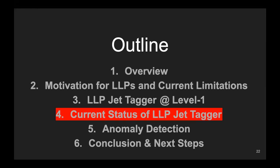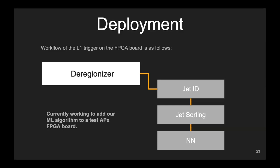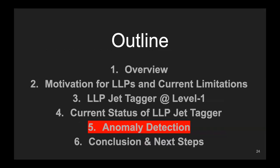What's the current status of the LLP tagger? The workflow of the L1 trigger on the FPGA board has a section called the D-regionizer, followed by the jet ID section where the seeded cone algorithm runs to cluster particles into jets, then jet sorting which sorts jets by transverse momentum, and finally the neural network algorithm. I'm currently working to add our machine learning algorithm to a test APX FPGA board, which is similar to the FPGA that will be running on CMS — specifically this neural network section.